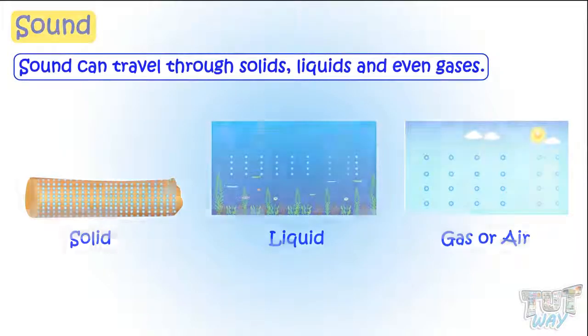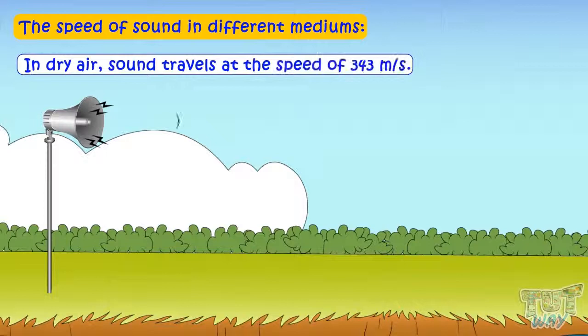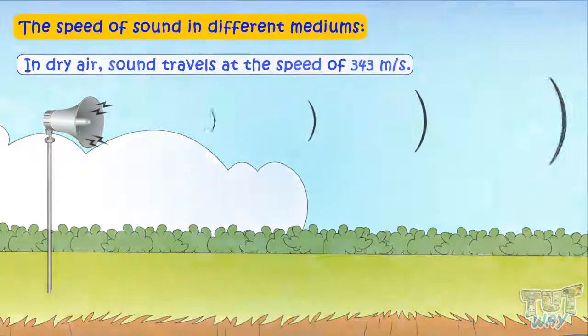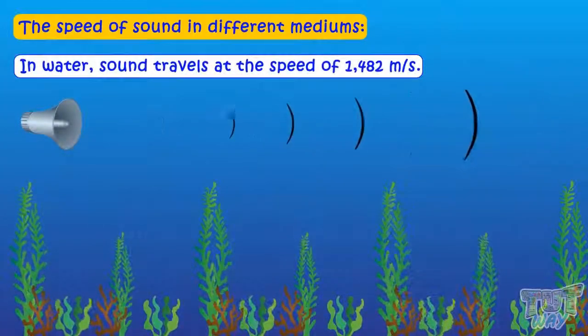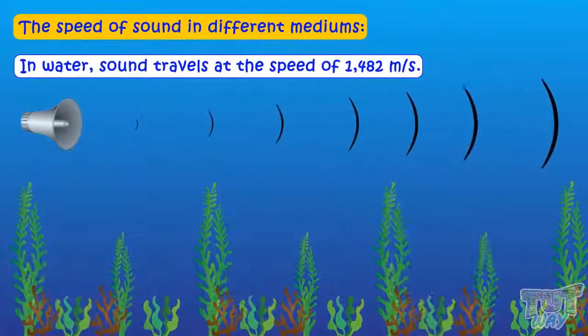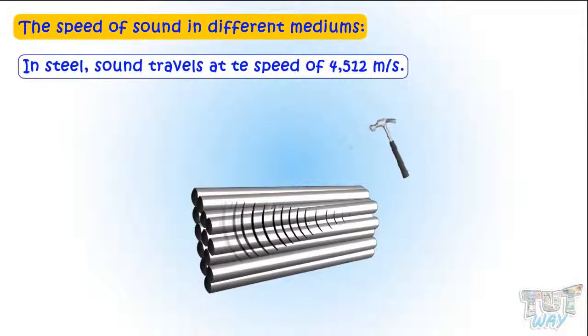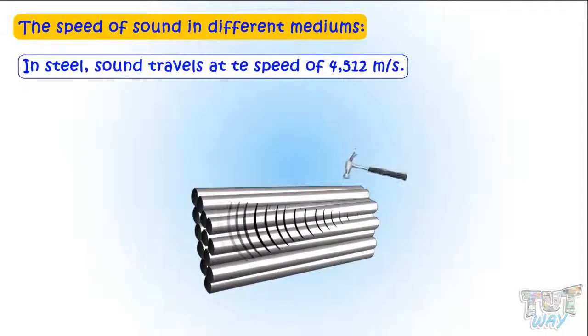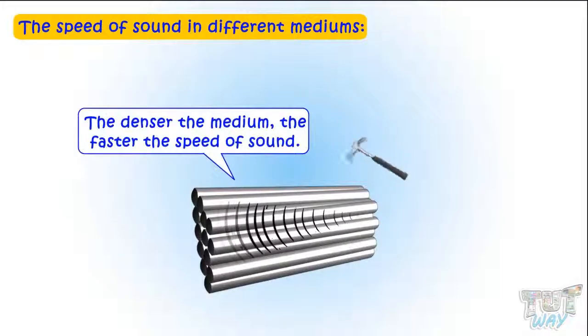Now let's learn what is the speed of sound in different mediums. In dry air, sound travels at 343 meters per second. In water, 1482 meters per second. Steel, 4512 meters per second. So, denser the medium, faster the speed of sound.